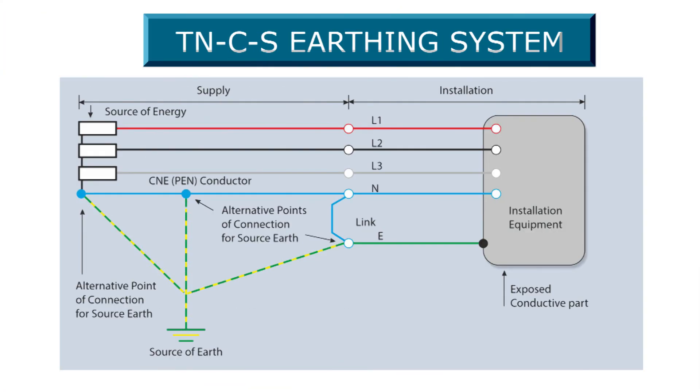Finally, the TNCS earthing system: the neutral and protective earth are combined into a single conductor in a part of the system. This type of earthing is also known as multiple protective earthing. The supply system PEN conductor is earthed at two or more points, and an earth electrode may be necessary at or near the consumer's installation. All the exposed conductor parts of the installation are connected to the PEN conductor via the main earthing terminal and the neutral terminal, and these terminals are linked together.